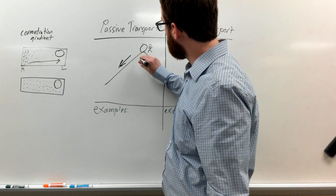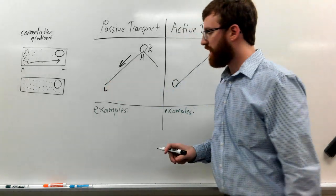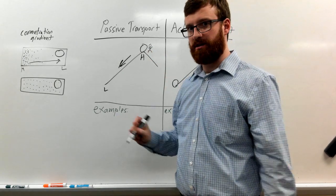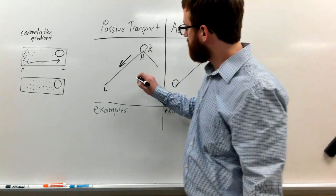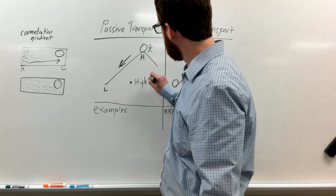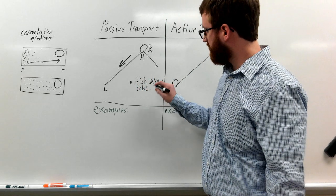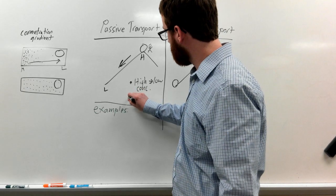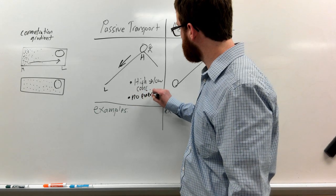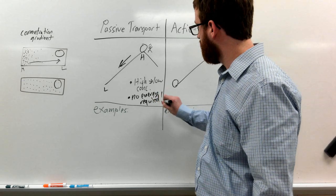So it goes, and the top of the hill is kind of like the high concentration, and the bottom is like the low concentration. Things just naturally will go from the high to the low concentration. So two points here is that it goes from a high to low concentration, and the second big point is no energy required. That's very important.